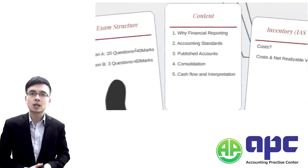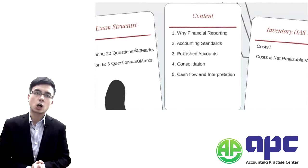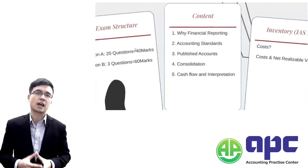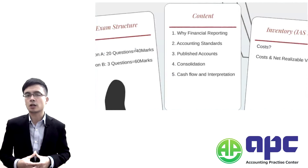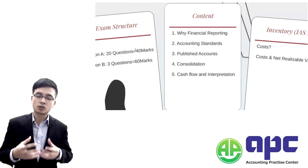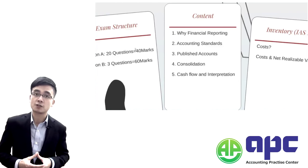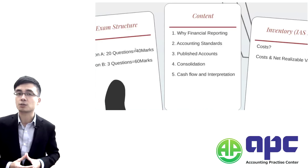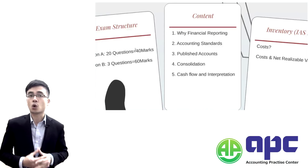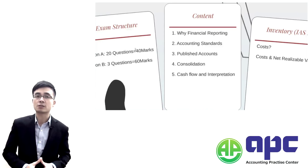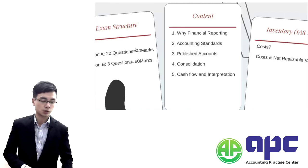Now let's look at the content of the F7 study. For APC, we'll divide the syllabus into five chapters. Chapter one is where we look at why we need financial reporting.